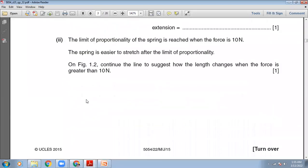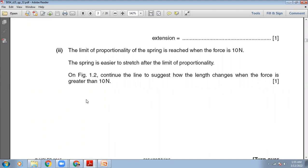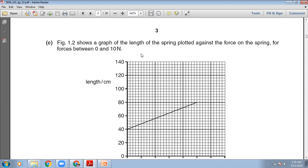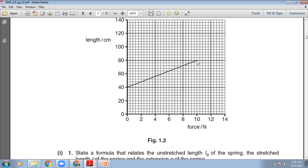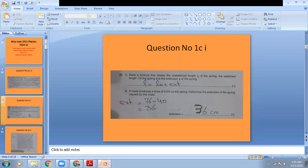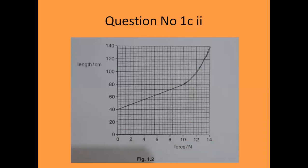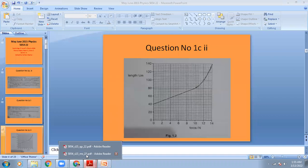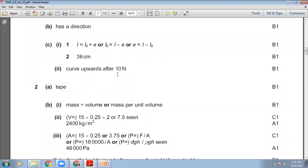The next question: the limit of proportionality of the spring is reached when the force is 10 Newton. The spring is easier to stretch after the limit of proportionality. On figure 1.2, continue the line to suggest how the length changes when the force is greater than 10 Newton. After 10 Newton, the limit of proportionality point is reached, and after this the graph will bend upward. The marking scheme says: curve upwards after 10 Newton. Our answer is right.